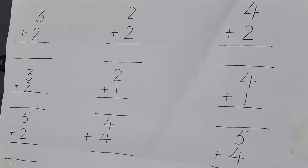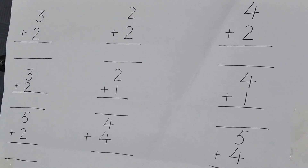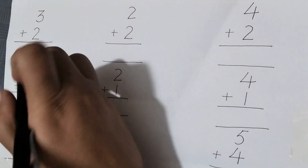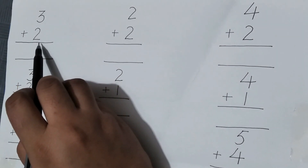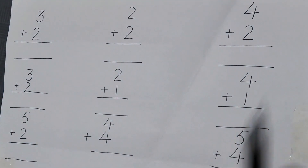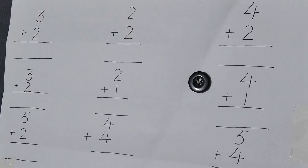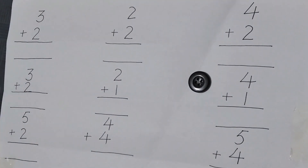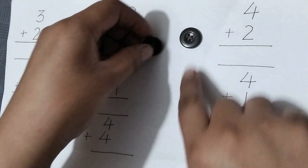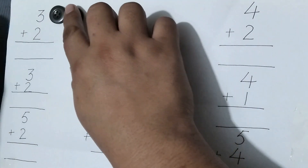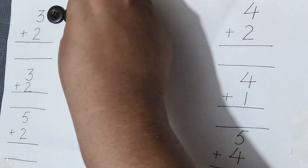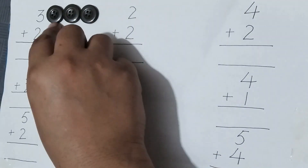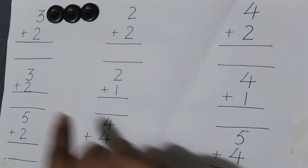Assalamu alaikum, today I will tell you about the concept of counting for preschool. Number one is three plus two. Here I have buttons. I will take three buttons — one, two, and three.